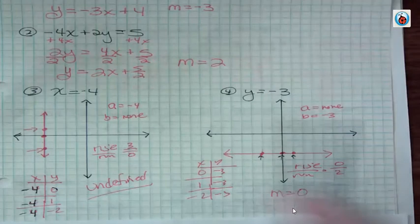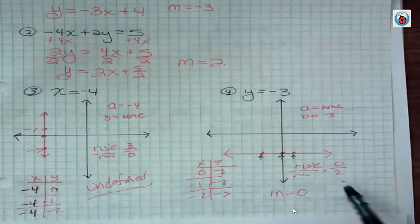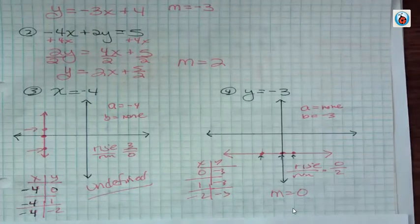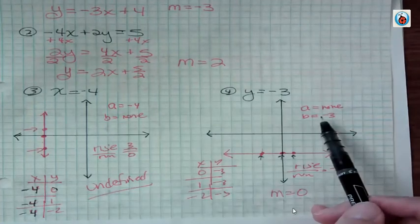When you have x equals some number, your slope is going to be undefined. Those are two different things. What is the A and B? This is from another video that I was talking about. A, remember,